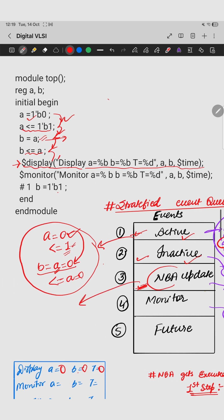Now after display is executed, our active is completed and there is no inactive. So we will come to the third step which is NB update. In NB update we will update the values. A was scheduled to get a value of 1, so A will get a value of 1. Similarly B is scheduled to get the value of this, but there is no change in the value of B.